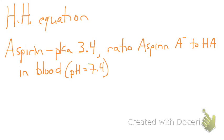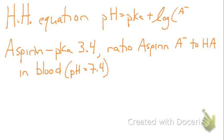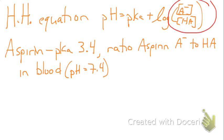The Henderson-Hasselbalch equation is: pH = pKa + log(A⁻/HA). In this problem, what we are trying to solve for is that ratio. We're given pH and pKa, so all we have to do is plug into the equation. The pH is 7.4, and the pKa is 3.4.